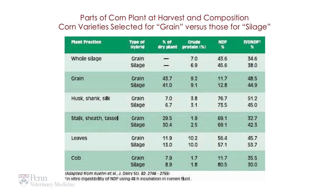IV NDF is the in vitro NDF digestibility. When we look at what proportion of those plants are grain, grain corn has a slightly higher proportion of the plant as grain — 43.7% — versus silage corn at about 41%. But again, similar content of crude protein, fiber, and digestibility. And as we get into the husk, shank, stalk, leaves, and cob, they have very similar nutrient contents. So the main difference between a corn plant grown for grain versus silage is the relative proportion of the ear to the rest of the stalk; the nutrient content is very similar.